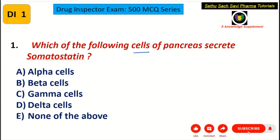A choice: alpha cells. B choice: beta cells. C choice: gamma cells. D choice: delta cells. And E choice: none of the above.